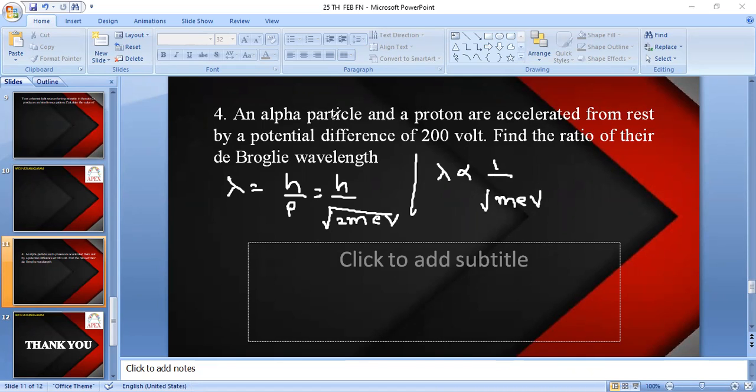Both were experienced only 200 volts of potential difference, same voltage. So V also becomes same. Lambda is proportional to 1 by root over me. If you calculate lambda of alpha particle by lambda of proton, it is inversely proportional.